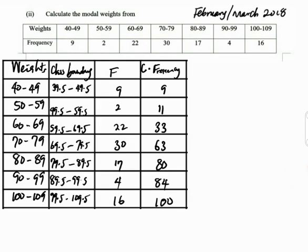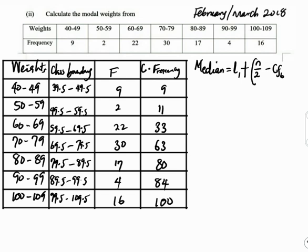To find the median of a grouped distribution, the formula is: Median = L₁ + [(n/2 − cf) / f] × w, where L₁ is the lower class boundary of the median class, n is the total frequency, cf is the cumulative frequency before the median class, f is the frequency of the median class, and w is the class width.